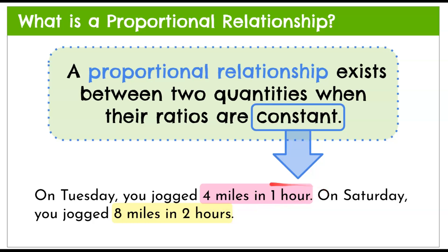We've learned about unit rate when the second quantity is one. Four miles in one hour is our unit rate. So after two hours, we should have run double — four miles each hour, giving us four plus four, is eight miles in two hours. We can see that this is a constant increase over time, and it's a proportional relationship.